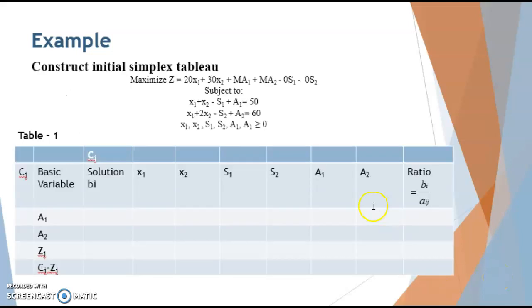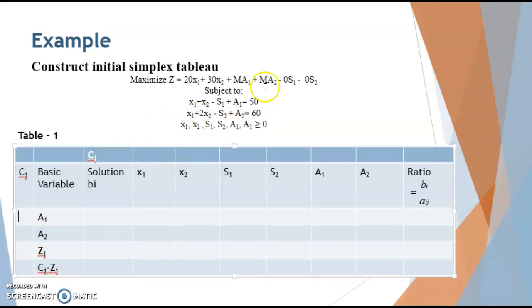Next we have to construct our initial simplex table. The first step is to decide your basic variables. In the first equation, the basic variable is a1 — not the surplus variable. We should never take the surplus variable as the basic variable; always take either the slack variable or the artificial variable. So a1 is chosen from the first equation and a2 from the second, and their coefficients in the objective function are capital M.